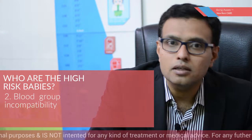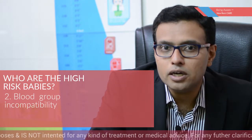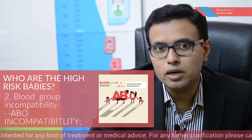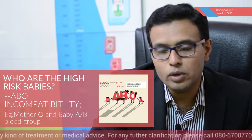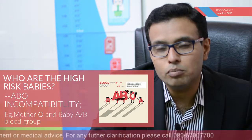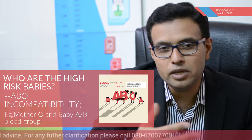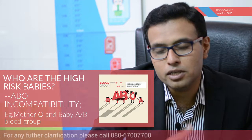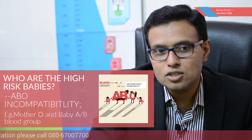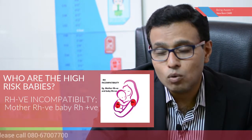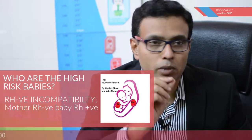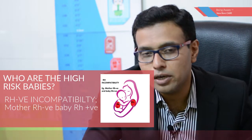Other risk factors are blood group incompatibilities. ABO incompatibility means the mother has blood group O and the baby has blood group A or B — 'A is awful, B is bad,' meaning B is slightly better than A. Next is Rh incompatibility, where the mother is Rh negative and the baby is Rh positive.